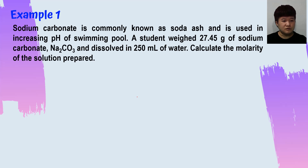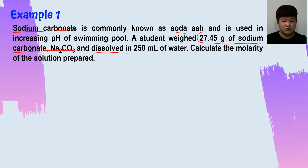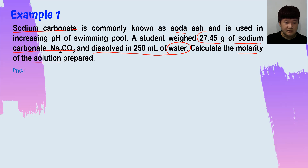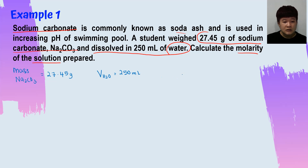Let's look into the first example. Sodium carbonate, known as soda ash, is used in increasing the pH of a swimming pool. A student weighed 27.45 grams of sodium carbonate and dissolved it in 250 mL of water. Calculate the molarity of the solution prepared. The first thing after reading the question is to take out all the values. The first information given is the mass of sodium carbonate: 27.45 grams. The second is the volume of H₂O: 250 mL. The question asks for molarity.